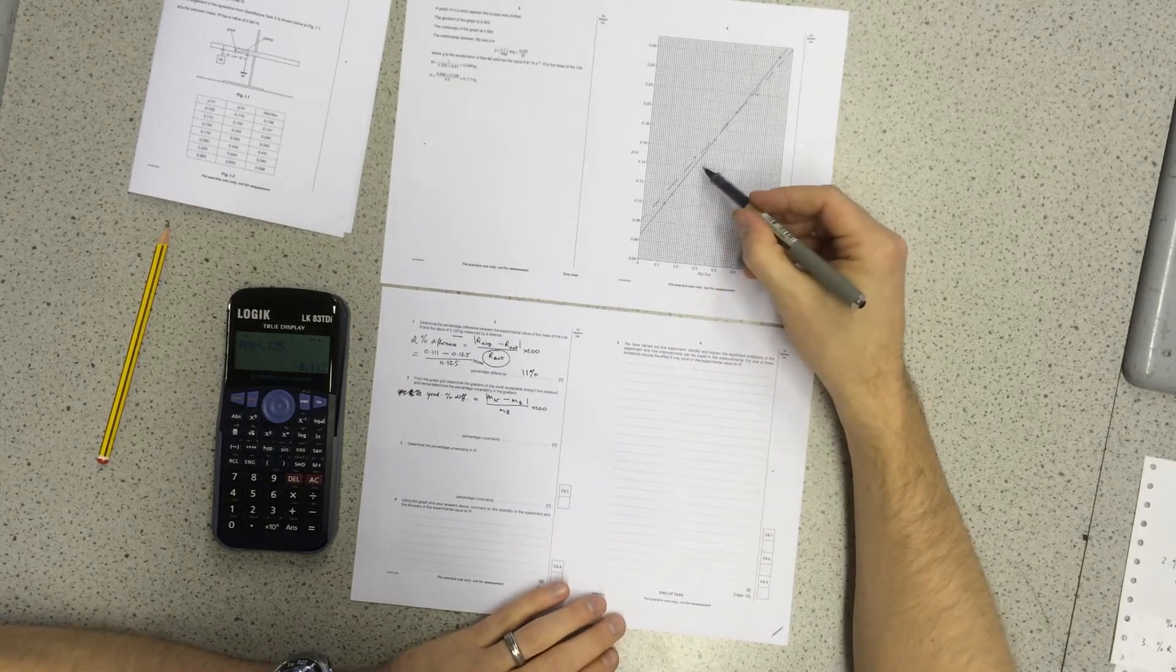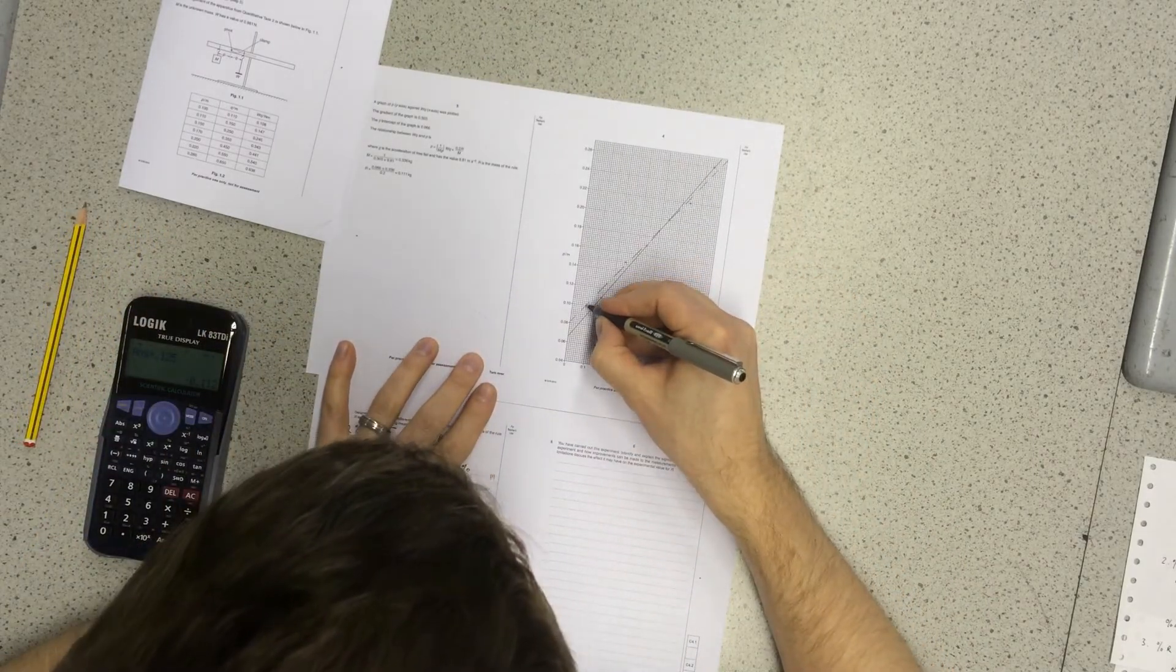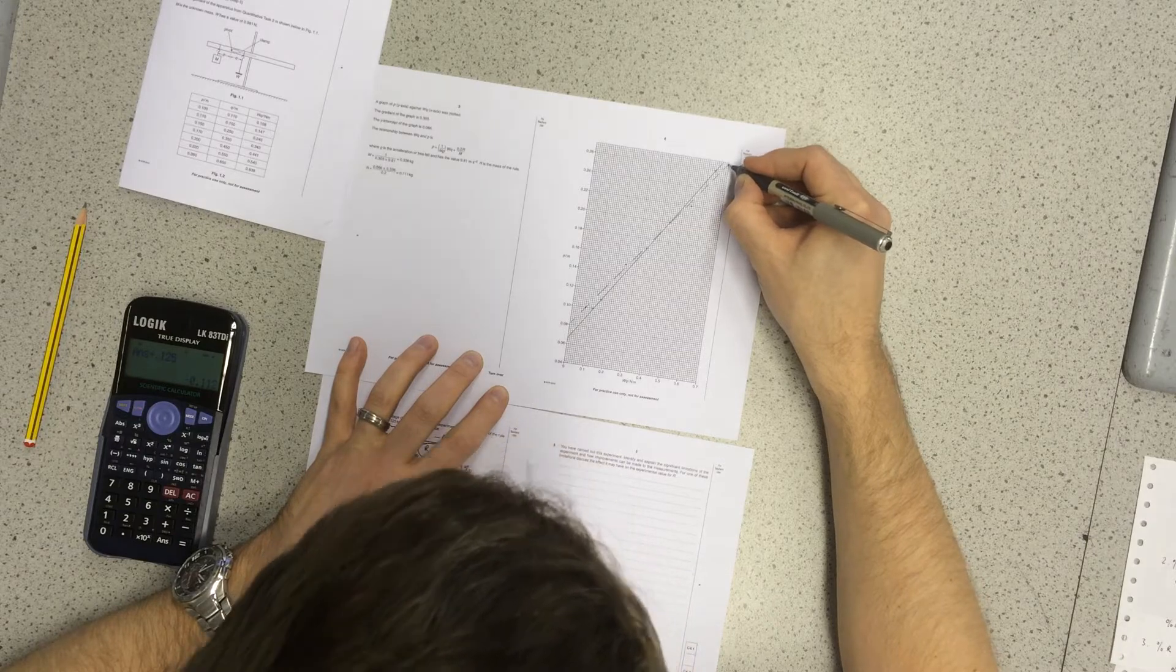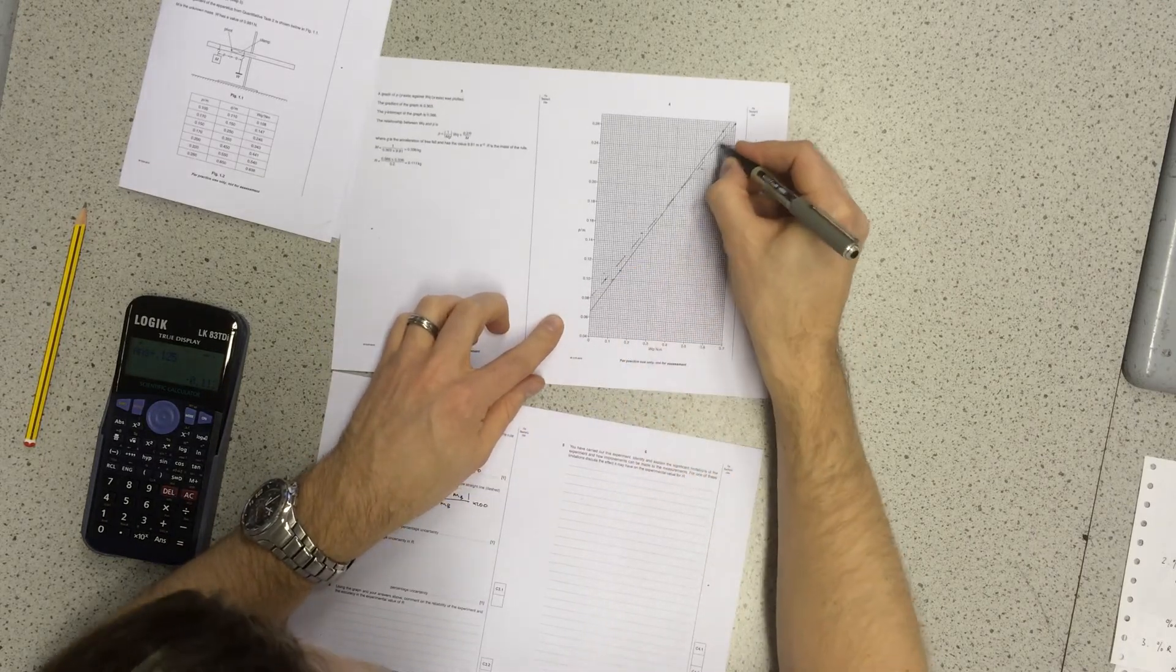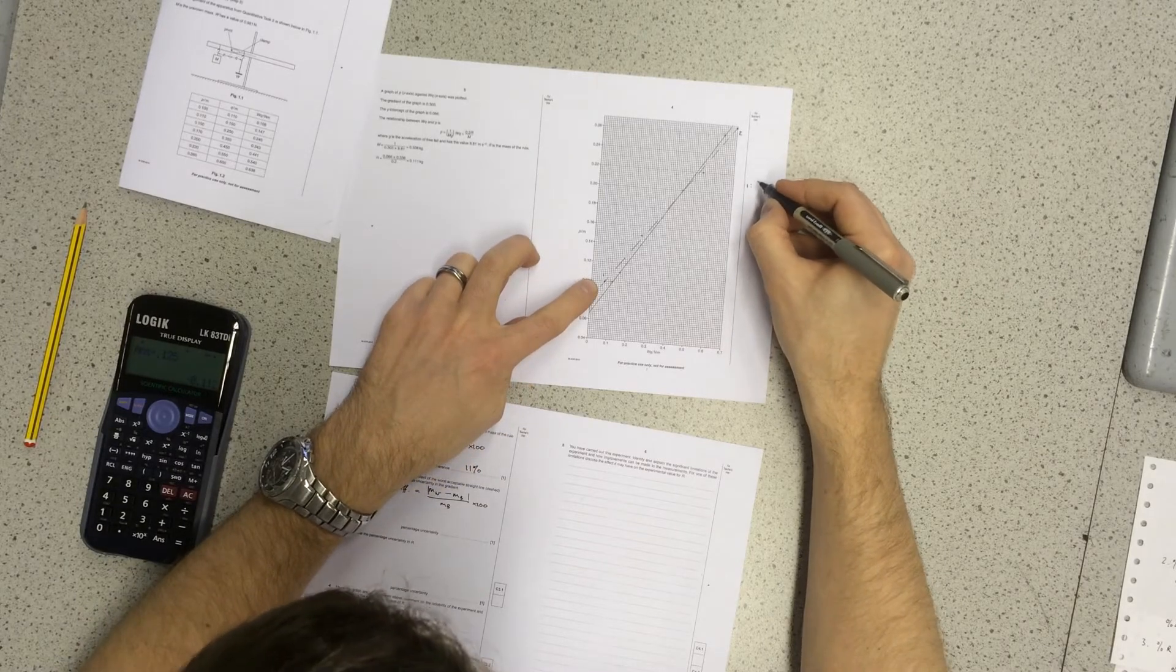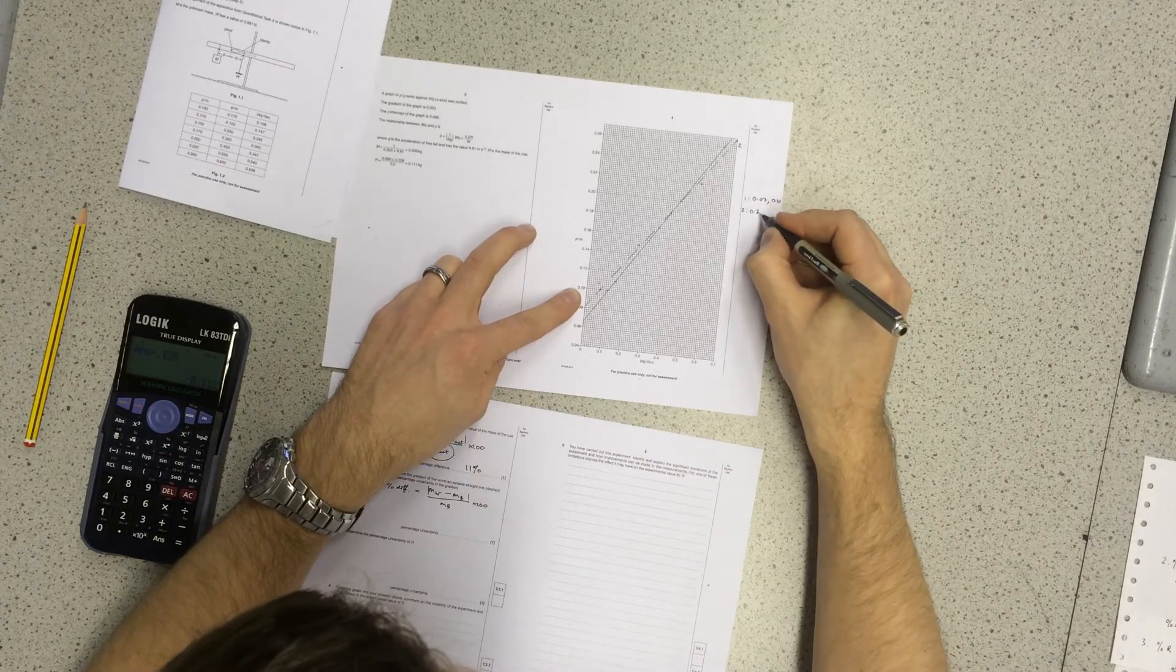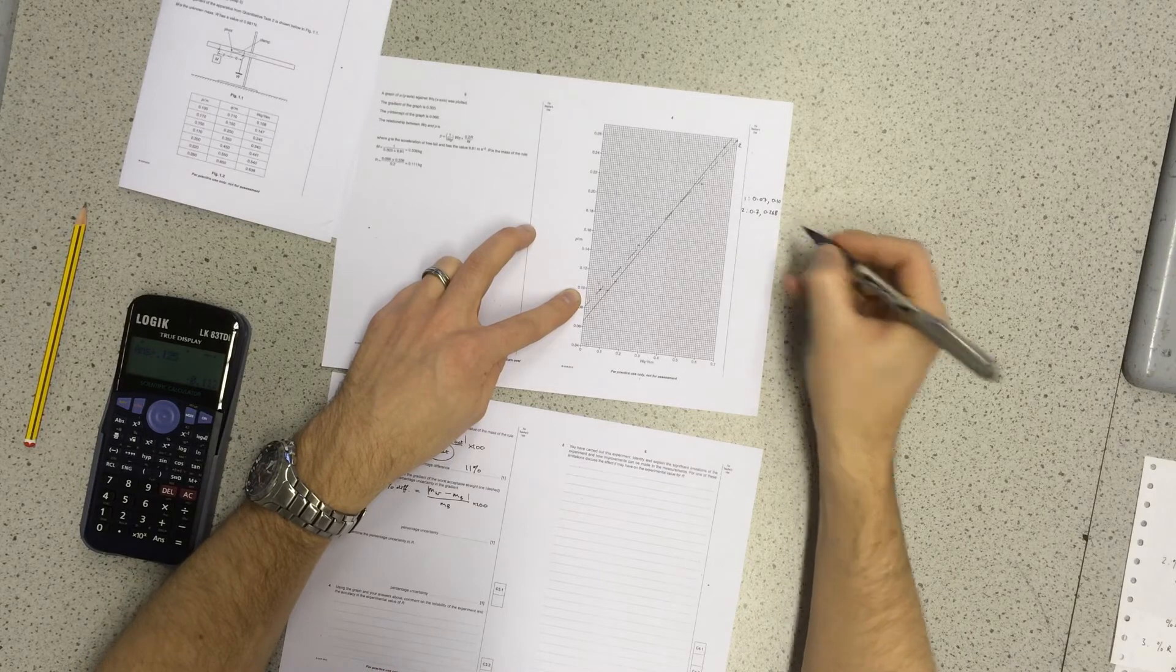Therefore, I need to determine what the gradient of the dashed line is. So for my points, I'll use here, where the dashed line is going neatly across this point, this intersection of horizontal and vertical grid lines. And up here as well, it's going neatly between an intersection there. So these points are, let's label these 1 and 2. Then, point 1, x1 is 0.07 and y1 is 0.102. Point 2, I've got 0.7 and 0.268. So I have my values there.